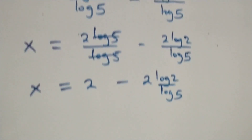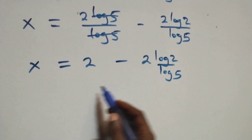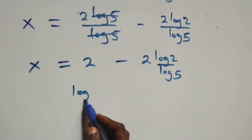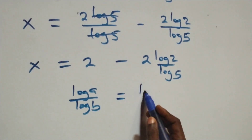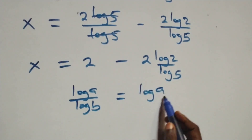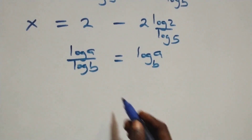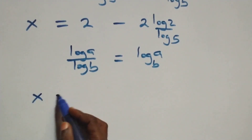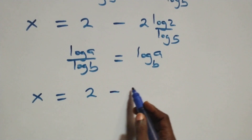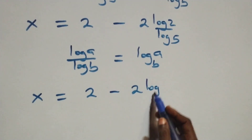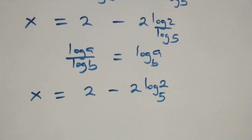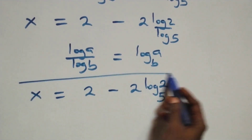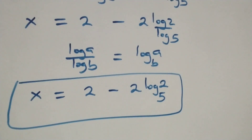Next, we apply the change of base formula. When we have log a over log b, that equals log a to base b. So all we have here becomes x equals 2 minus 2 log 2 base 5. That is the value of x: 2 minus 2 log₅2.